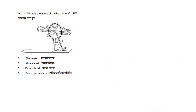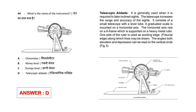First question: What is the name of the instrument? Options: Clinometer, Ebony Level, Dumpy Level, Telescopic Alidade. The answer is option D, Telescopic Alidade.